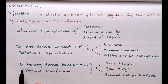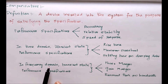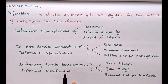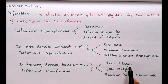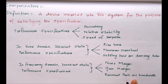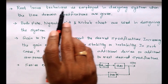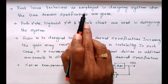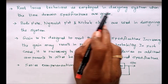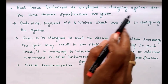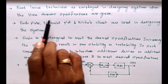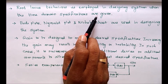If the system is in the frequency domain, the transient state performance specifications are phase margin, gain margin, resonant peak, or bandwidth. Root locus technique is employed in designing the system when time domain specifications are given.